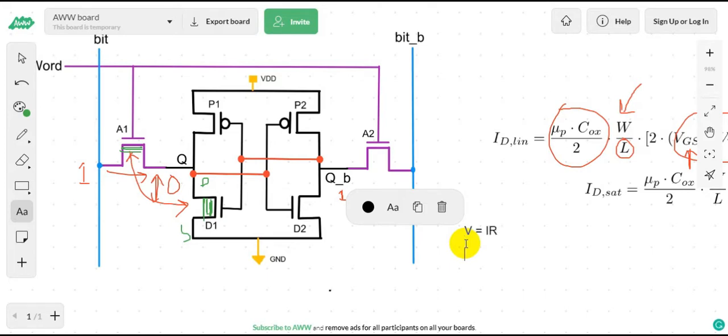Here the V is fixed, so the I is proportional to one by R. So the current is proportional to W/L and also one by R.